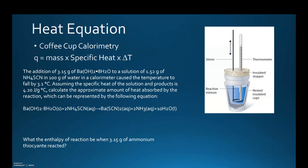When we move on to the heat equation, there are two different types of equations that involve using it. The first one is coffee cup calorimetry, and the second is bomb calorimetry. Coffee cup calorimetry utilizes the heat equation: Q equals mass times specific heat times delta T. The specific heat depends on the substance, the mass depends on what's present, and delta T is the change in temperature — T final minus T initial.